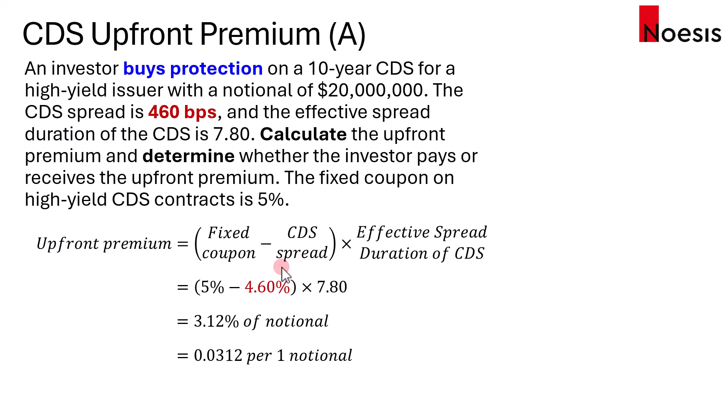If you scale it from 1 unit to $20 million and multiply by $20 million, the upfront premium will be $624,000. The next part is how do you know whether the investor would pay or receive the upfront premium?